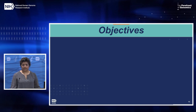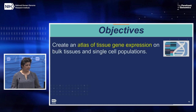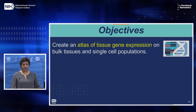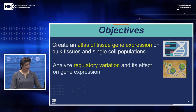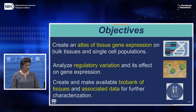The objectives for DGTEX are: first, to create an atlas of tissue gene expression on bulk tissues and single cell populations — DGTEX would benefit from the rise of single cell technology to understand how distinct cell types influence each other during the development of organs and tissues. Second, to analyze regulatory variation of genomic sequencing and its effect on gene expression. And finally, to create and make available a biobank of tissues and data for further characterization.